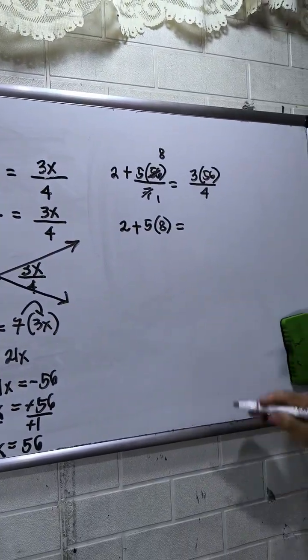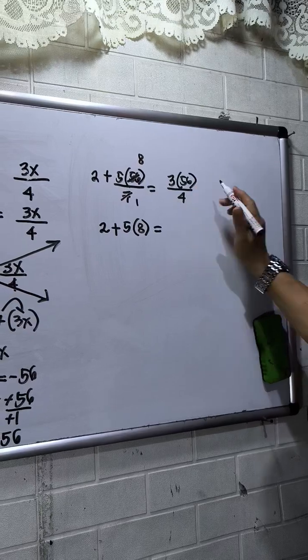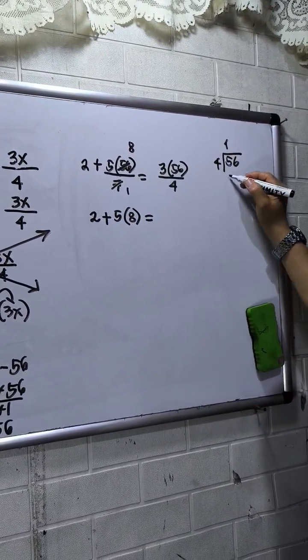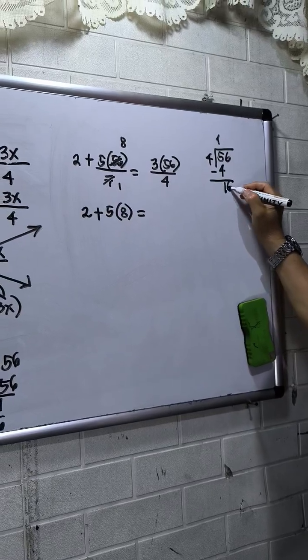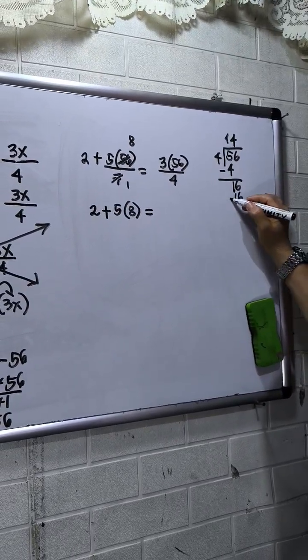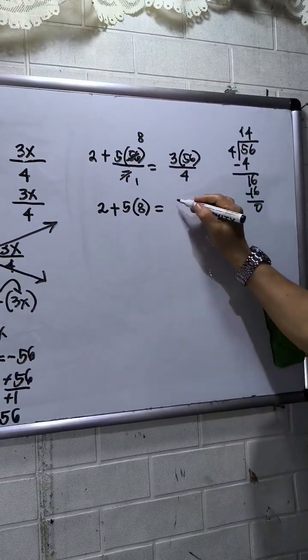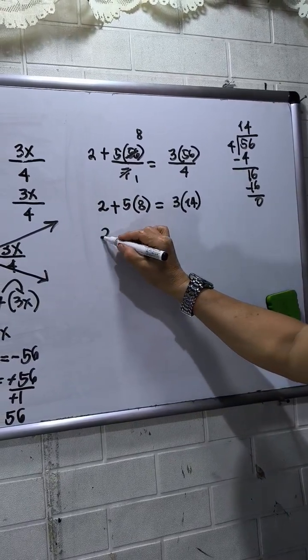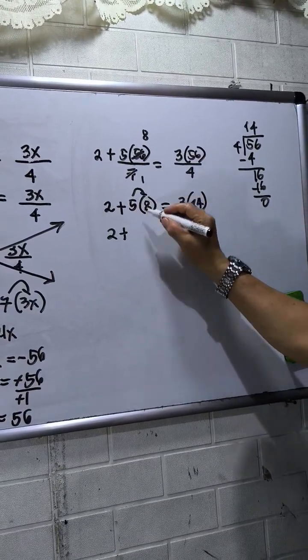5 times 56 equals... 56 can we divide by 4, 56 divided by 4. So this will be 14, then this will be 4 into 16, that will be 3 times 14. Okay, so this will be 2, 5 times 8 that will be 40.